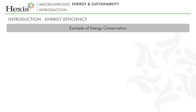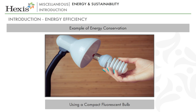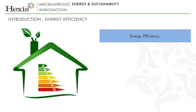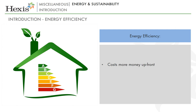An example of energy efficiency is using a compact fluorescent bulb rather than a traditional incandescent bulb, as it uses much less electrical energy to produce the same amount of light. Increasing energy efficiency often costs more money up front, but in many cases this capital outlay will be paid back in the form of reduced energy costs within a short time period. This makes efficiency improvements an attractive starting point for reducing carbon emissions.